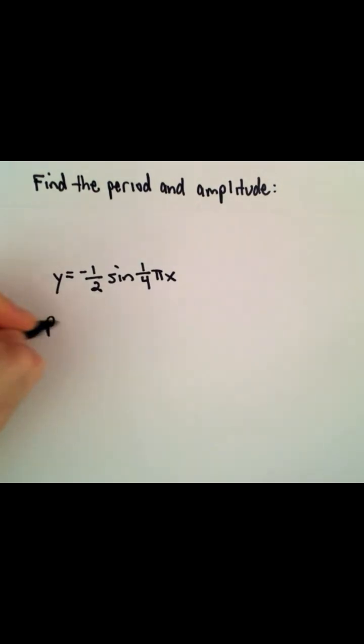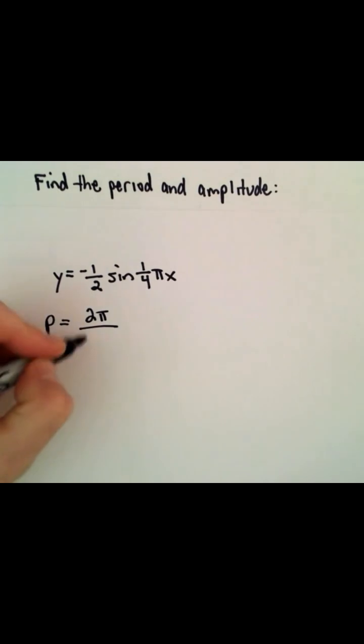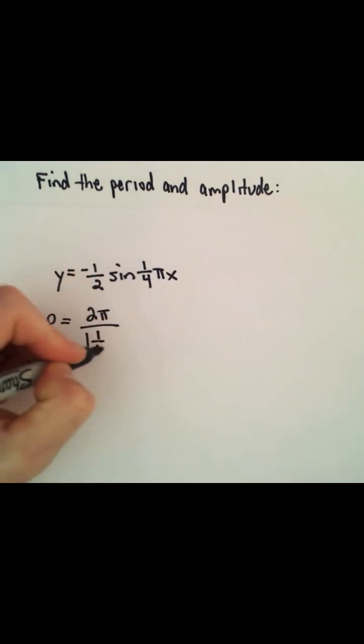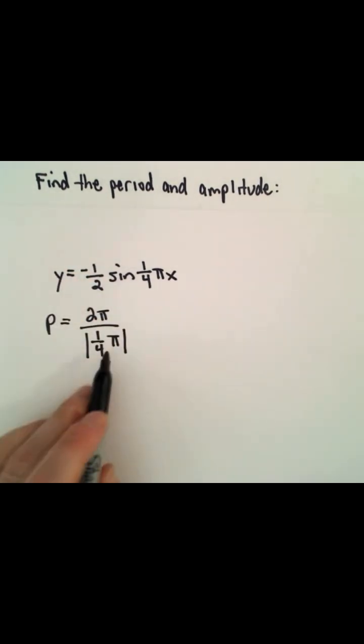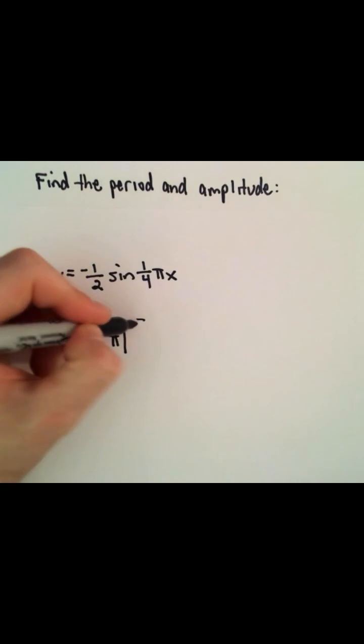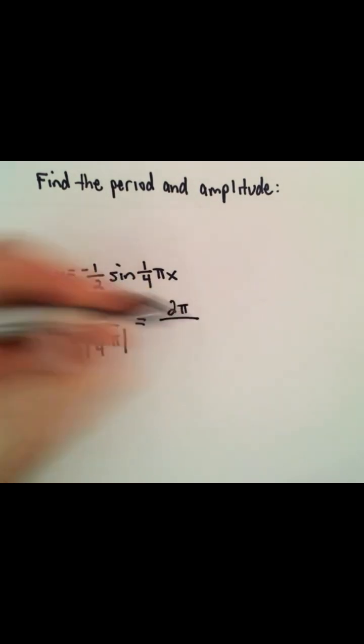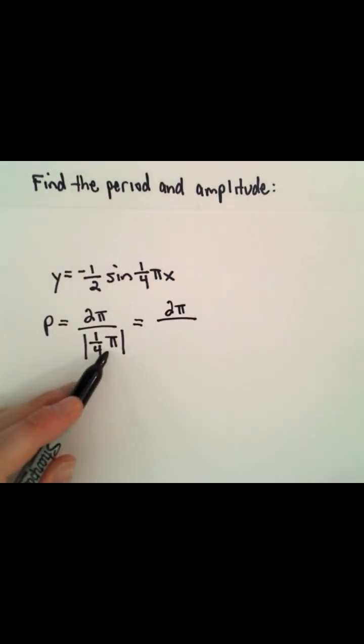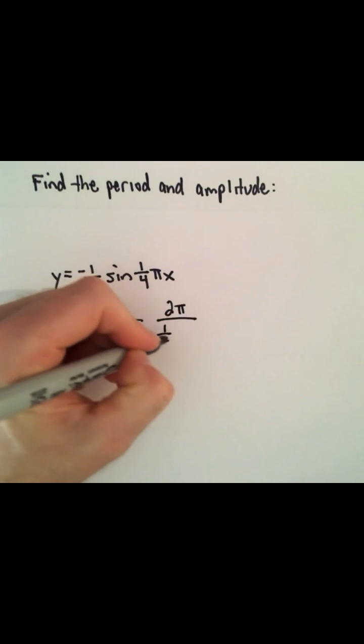So to get the period, we'll use two pi divided by the absolute value of b. And here the value for b will be one-fourth pi. So we have two pi divided by the absolute value of one-fourth pi, which will just stay one-fourth pi.